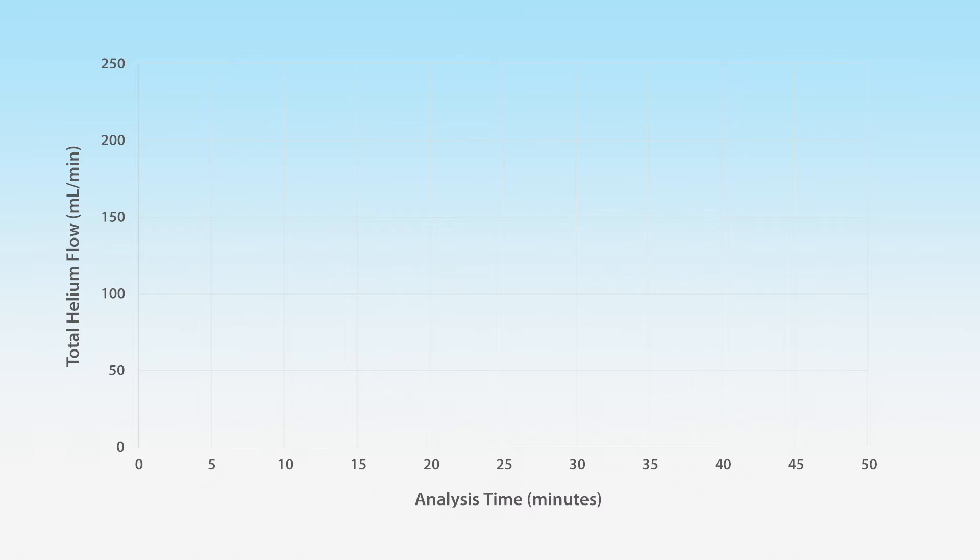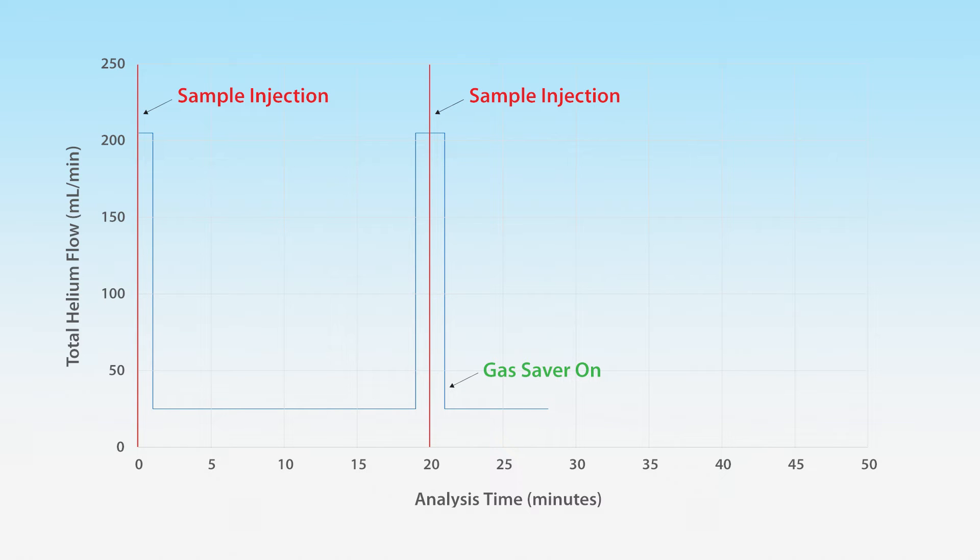Gas Saver Mode activates one minute after sample injection, which reduces our split flow to our set rate of 20 milliliters per minute. Our column flow and septum purge are unchanged, resulting in a total helium flow of 25 milliliters per minute.